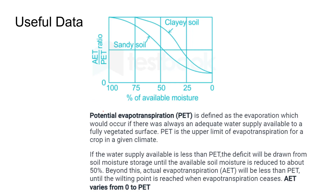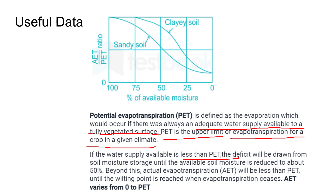Potential evapotranspiration (PET) is defined as the evapotranspiration which would occur if there was adequate water supply available to a fully vegetated surface. PET is the upper limit of evapotranspiration for a crop in a given climate. If the water supply available is less than PET, the deficit will be drawn from the soil moisture storage until the available soil moisture is reduced.